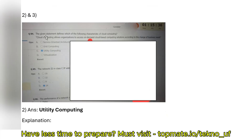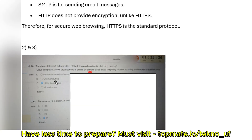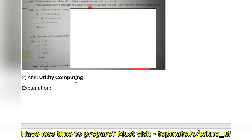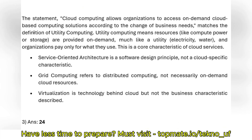The second question asks about cloud computing, which allows organizations to access on-demand cloud-based computing solutions according to changing business needs. For example, if your business needs 100 GB of cloud storage today but 150 GB in the future, you can request more from the cloud provider based on need. The options are service-oriented architecture, grid computing, utility computing, and virtualization. Based on changing utility of demand, utility computing is the correct option.